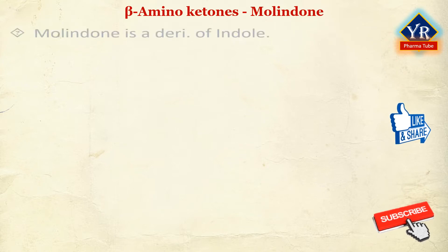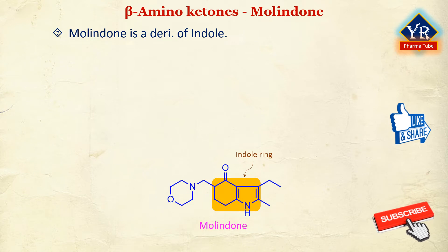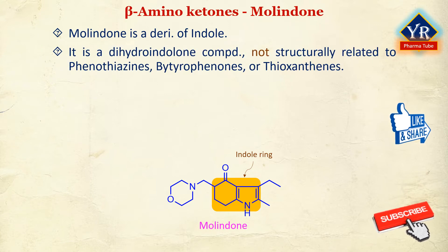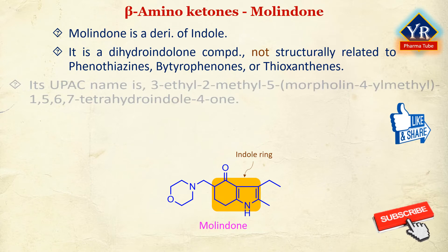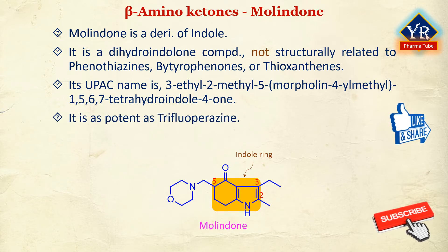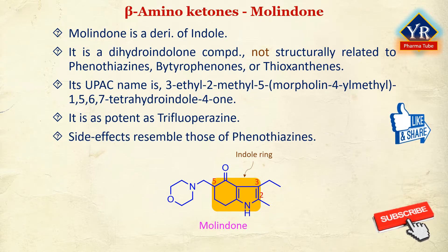This would produce a cationic center, two-atom distance, and an aryl group that could be superimposed on the analogous features of protonated dopamine. Molindone is a derivative of indole. It is sometimes described as a typical antipsychotic and sometimes as an atypical antipsychotic drug. It is a dihydroindolone compound which is not structurally related to phenothiazines, the butyrophenones, or the thioxanthenes. It is chemically 3-ethyl-2-methyl-5-morpholin-4-yl-methyl-1,5,6,7-tetrahydroindole-4-one. It is about as potent an antipsychotic as trifluoperazine. Overall, side effects resemble those of the phenothiazines.